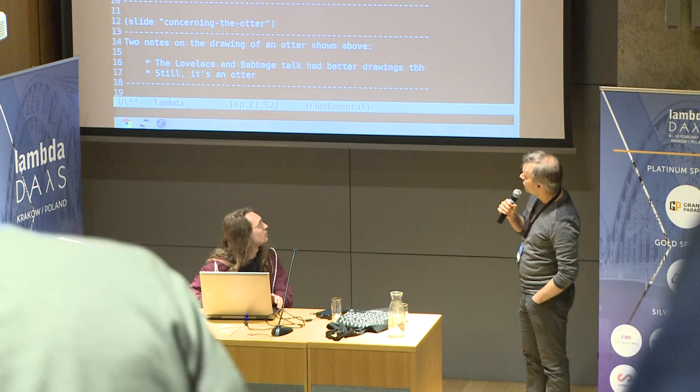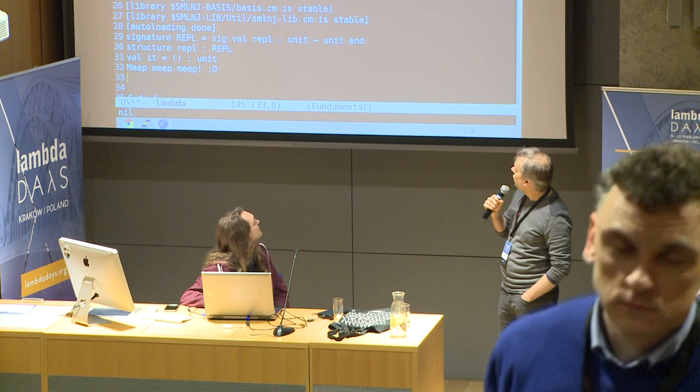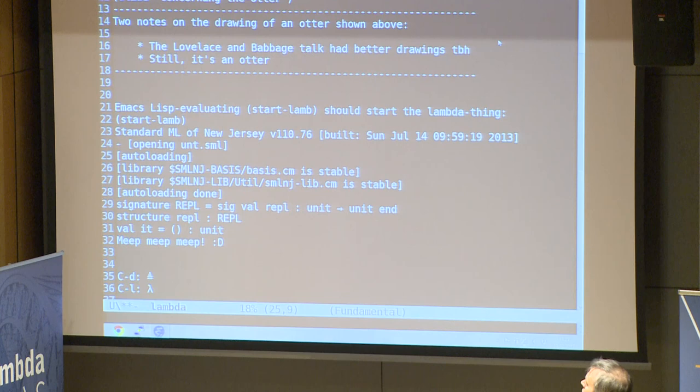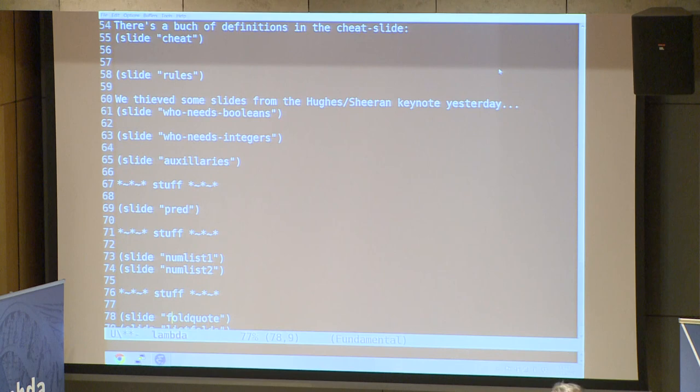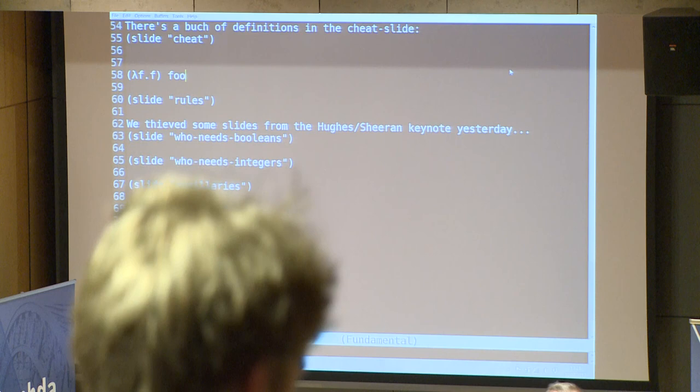This sets up Emacs to be a lambda machine. We started by evaluating 'stack lamb' and it says meep, meep, meep. So this is Emacs with Standard ML running in the background with a lambda interpreter. If you want to type along, you can go to the GitHub repo and download it. We can do things like evaluate expressions and it will evaluate them for us.